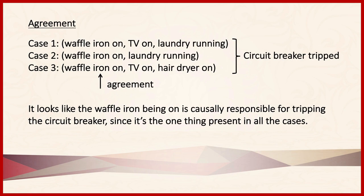Let's begin with the method of agreement. In this example, we have three cases. In case one, a waffle iron is on, a TV is on, and laundry is running. In case two, the waffle iron is on and laundry is running. In case three, the waffle iron is on, the TV is on, and the hair dryer is on. In all three cases, a circuit breaker has been tripped. Notice that the waffle iron being on is present in all of the cases — that's the method of agreement. This gives us evidence that the waffle iron being on is causally responsible for tripping the circuit breaker.